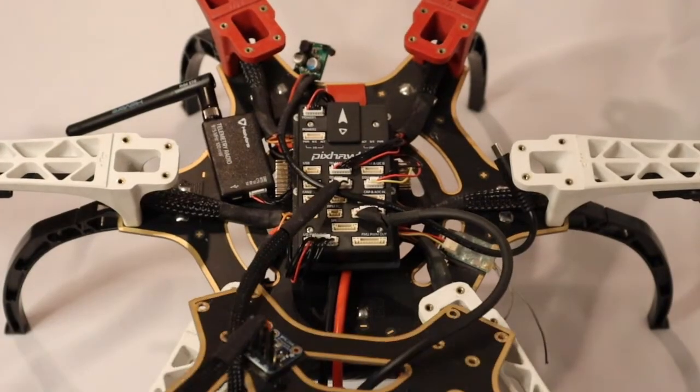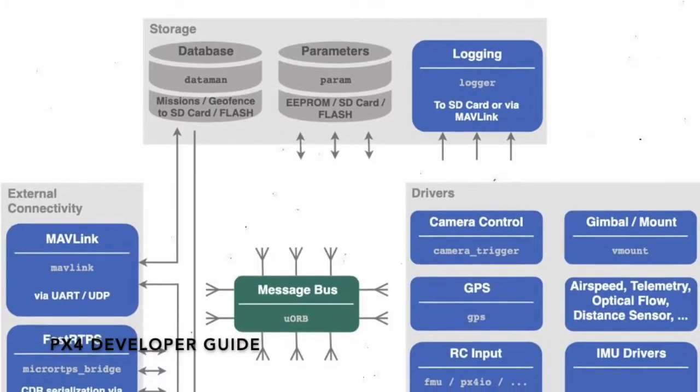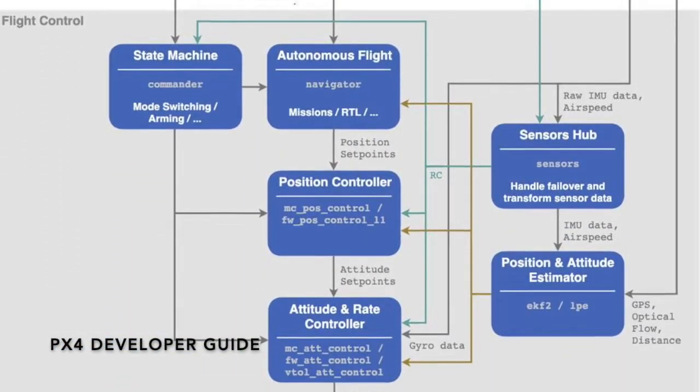The PixHawk 4 was selected as the flight controller. The flight controller can be thought of as the drone's brain. It controls peripheral hardware, communication, flight logs, and of course dictates the speed of the motors.